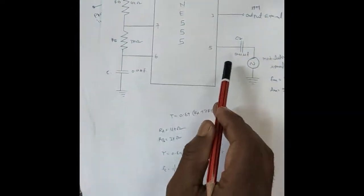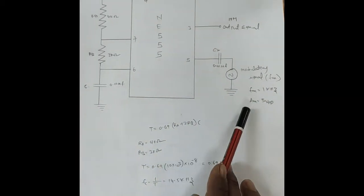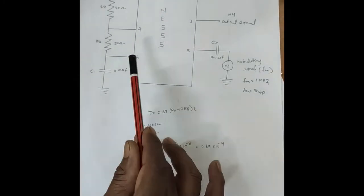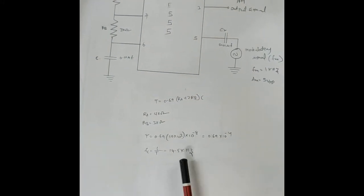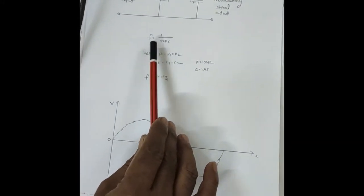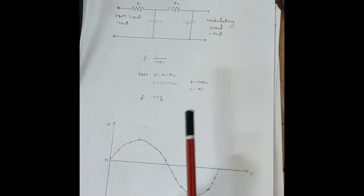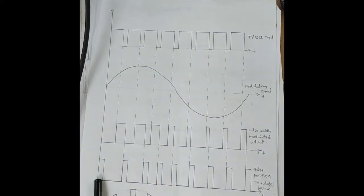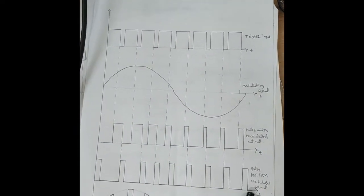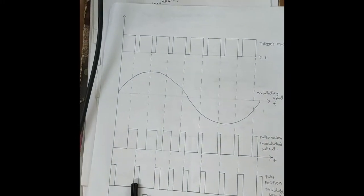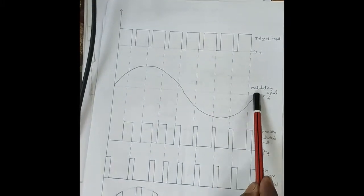This is the circuit diagram of Pulse Position Modulation. Here, this is the astable multivibrator. The modulating signal is given to the 5th pin — frequency fm is 1 kHz, amplitude 5 volts. The pulse signal is internally generated with frequency fp equal to 14.5 kHz. The condition is T equal to 0.69 into (Ra plus 2Rb) into C. The demodulation circuit uses cutting frequency Fc equal to 1 by 25 RC, with R equals 150 ohms and C equals 1 microfarad. The relative position of the pulse is proportional to the amplitude of the modulating signal — this is Pulse Position Modulation.